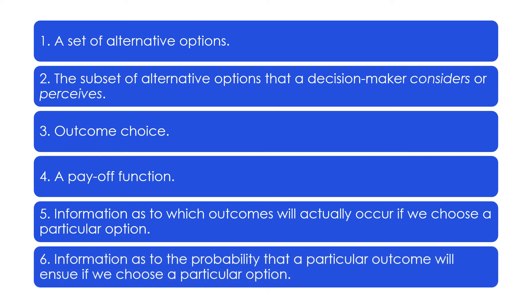Six, information as to the probability that a particular outcome will ensue if we choose a particular option. This element is more precise than element five — it's the probability that each outcome will occur if an option is chosen. Like all theories, the rational choice theory is not perfect. If you want to advance this theory, how would you start?